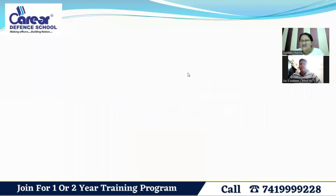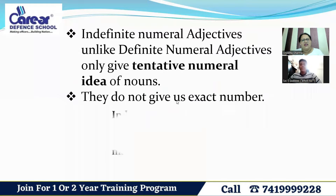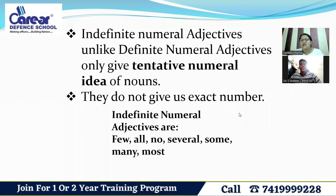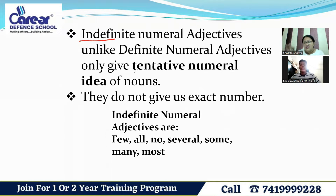The next one is indefinite numeral adjective. As the name explains, indefinite means which is not definite. So indefinite numeral adjective, unlike definite numeral adjective, only gives a tentative idea — an approximate rough idea — about any noun. For example: some, few, little, many, several.